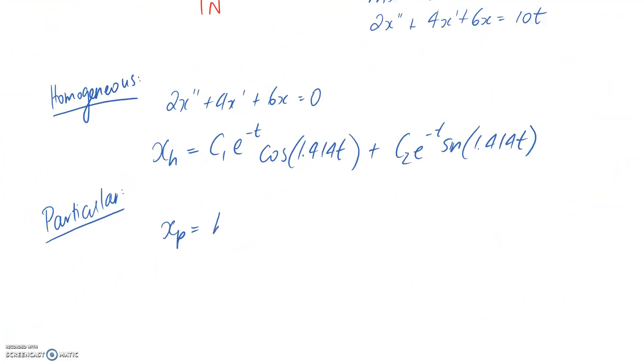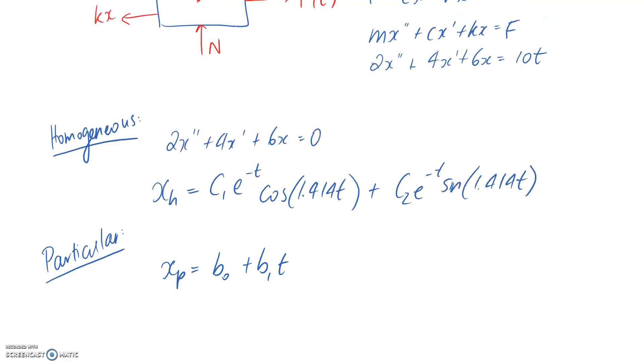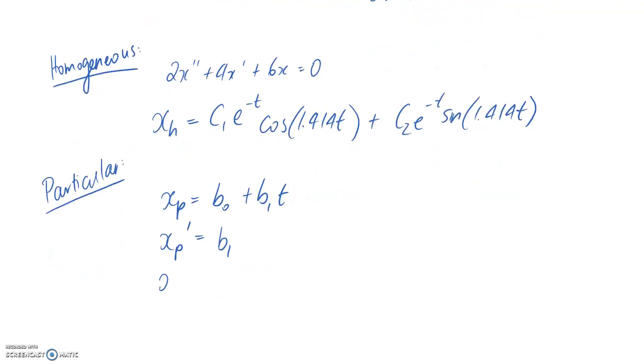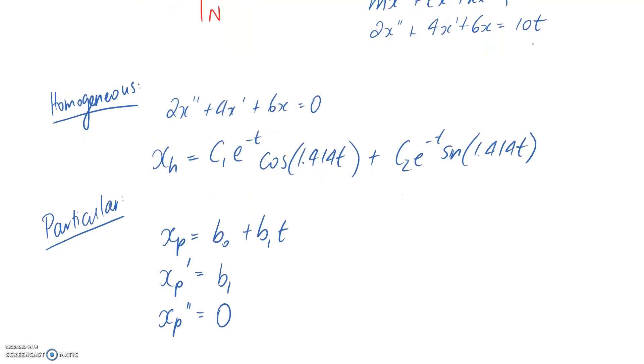So xp, we're assuming is this. And we're going to substitute it into our non-homogeneous one up here. So we need the first derivative and the second derivative to be able to do that. So taking a first derivative here, the constant is going to go to zero and the derivative here would just be b1. And if we take a second derivative, all we've got is a constant. So its derivative is going to be zero.